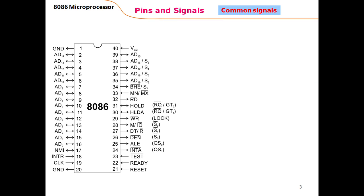The 8086 microprocessor is normally packaged in a Dual Inline Package (DIP) where it has 40 pins — 20 pins on the left-hand side and 20 pins on the right-hand side. The pins are numbered from 1 to 20 on the left side, and from 21 to 40 on the right side. Each pin has a specific function or set of functions; some pins have one function and some have more than one.